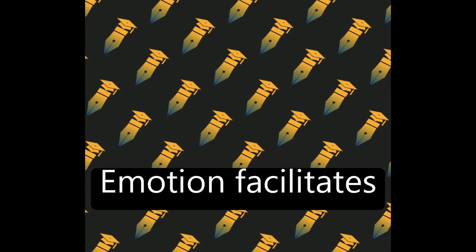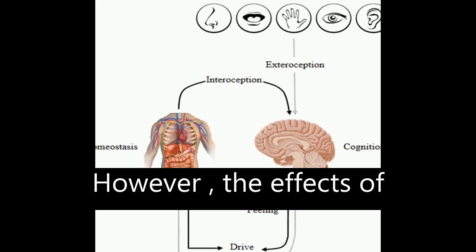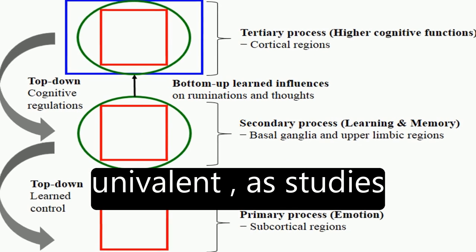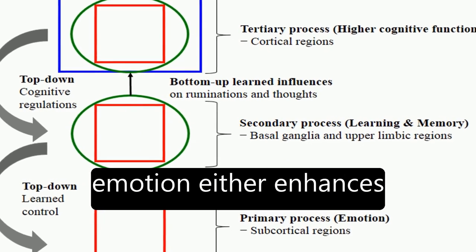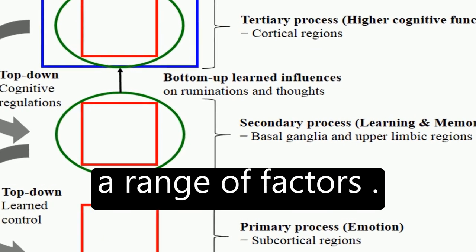Emotion facilitates encoding and helps retrieve information efficiently. However, the effects of emotion on learning and memory are not always univalent, as studies have reported that emotion either enhances or impairs learning and long-term memory retention, depending on a range of factors.